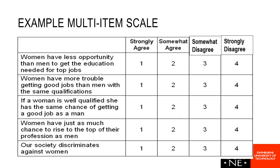Here we have an example of a multi-item scale — just a very small example. We can see it is what we call a four-point scale because we've got four different options: strongly agree, somewhat agree, somewhat disagree, strongly disagree, with numbers 1 through 4 attached to them.